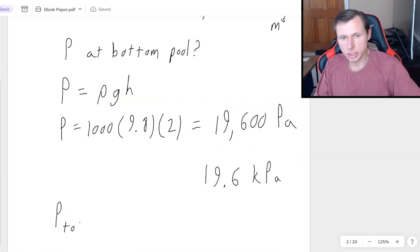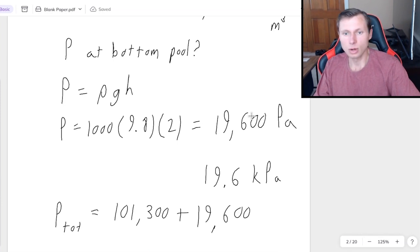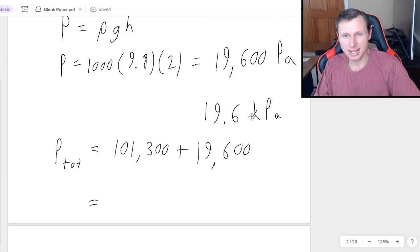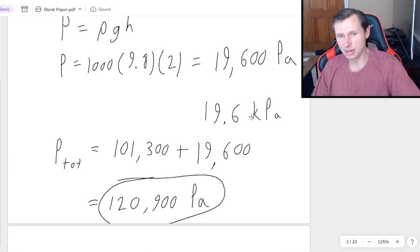So in other words, the total pressure is equal to one ATM, which is 101,300 pascals plus the 19,600 pascals we had from earlier. And that will get us a final answer of 120,900 pascals. And there we go. That's how we do it.